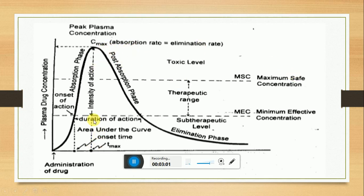Next is Tmax, the time of maximum plasma concentration — the time at which maximum drug plasma concentration is obtained, called Tmax. Area under the curve is the total integrated area under the plasma level time profile curve, called the area under the curve (AUC).